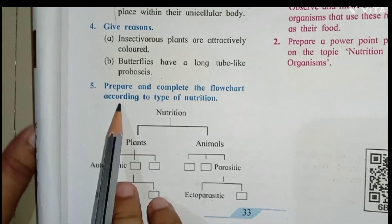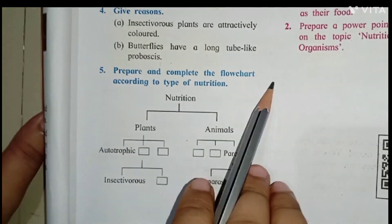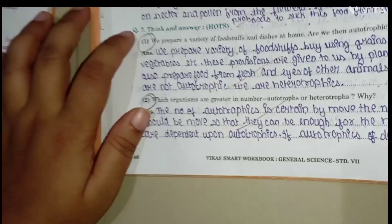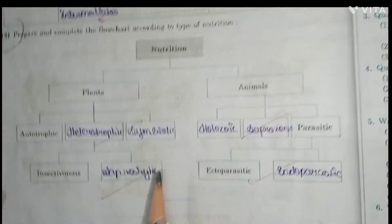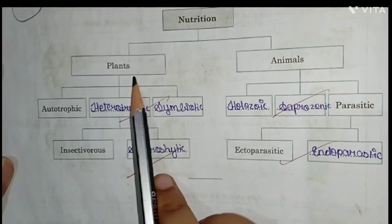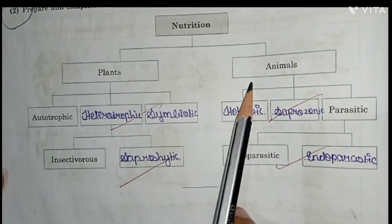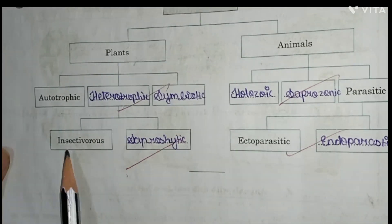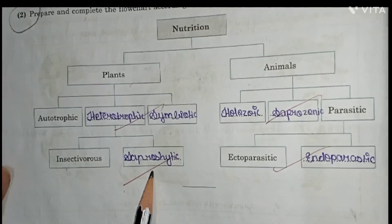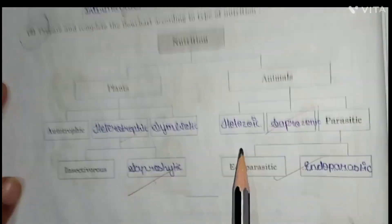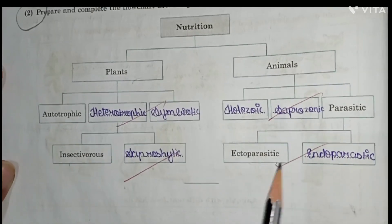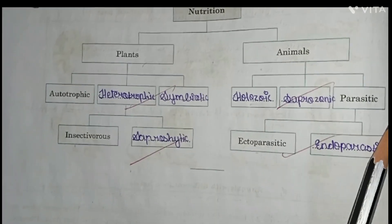Question number five: prepare and complete the flow chart according to the type of nutrition. The answer: plants — autotrophic; animals — heterotrophic, which includes symbiotic, insectivorous, and saprophytic. Under animals: holozoic, saprozoic, parasitic — active parasite and endoparasitic. Question number five is completed.